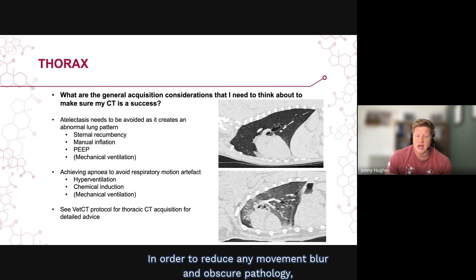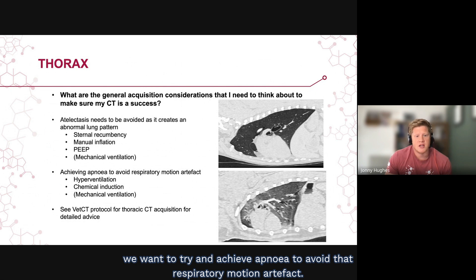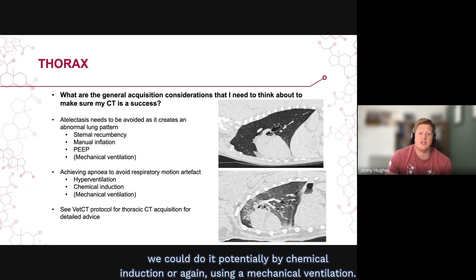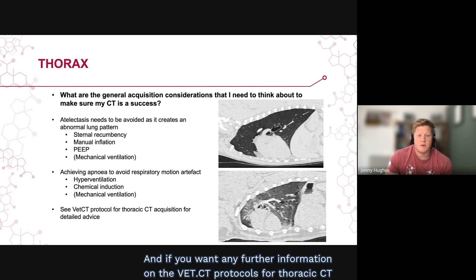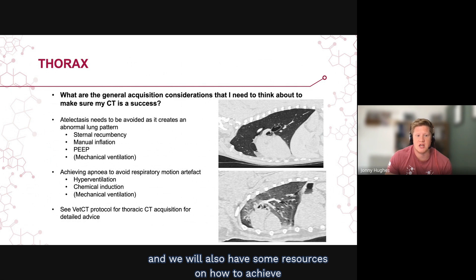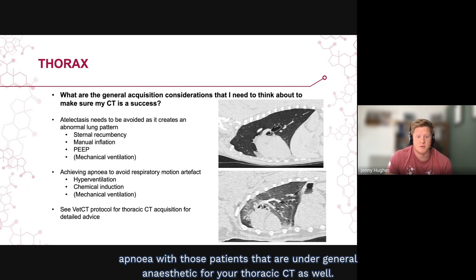To reduce movement blur and avoid obscuring pathology, we want to achieve apnea to avoid respiratory motion artifact. This can be done by hyperventilating the patient, by chemical induction, or by using mechanical ventilation. For further information on VET-CT protocols for thoracic CT acquisition and detailed advice on achieving apnea in patients under general anaesthetic, additional resources are available.